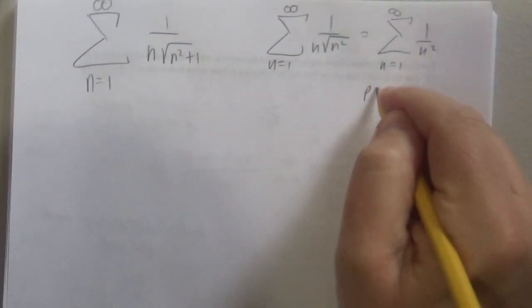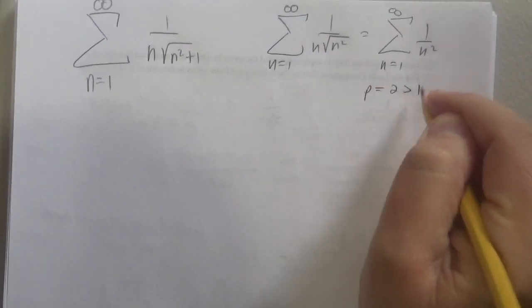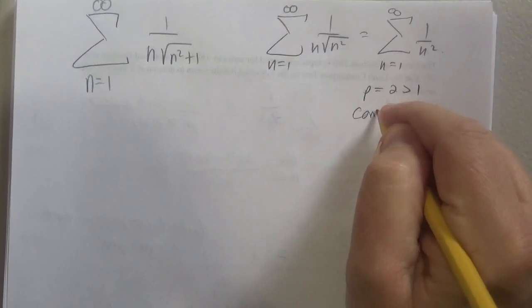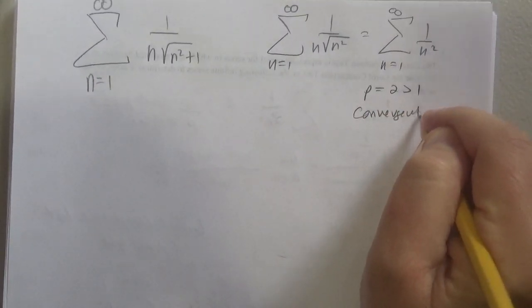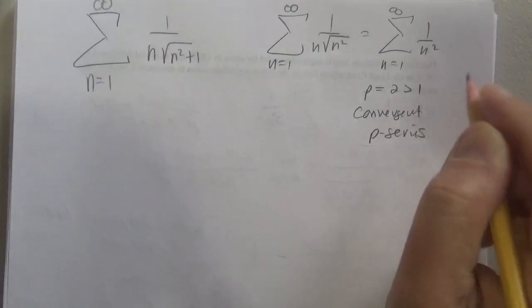So this is clearly a p-series with p equals 2, which is bigger than 1, which is a convergent p-series.